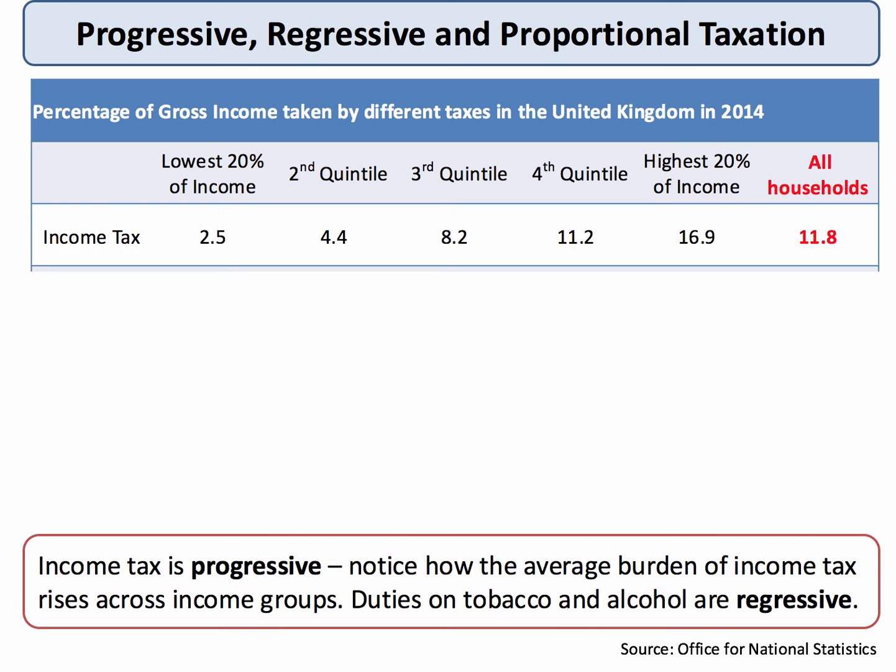This table shows the quintile distribution of the population in the UK. The lowest 20% are the poorest fifth of households in the UK, and then we go to the second, third, and fourth quintile, through to the highest 20%, which are the richest fifth of households in Britain.